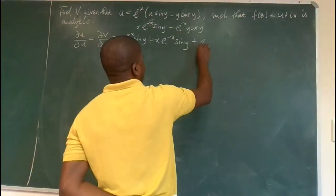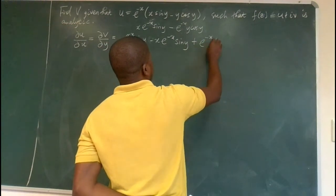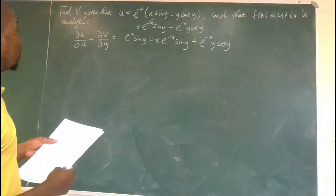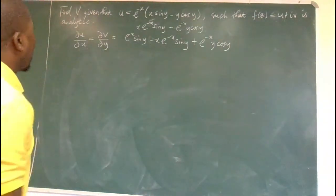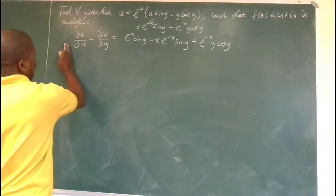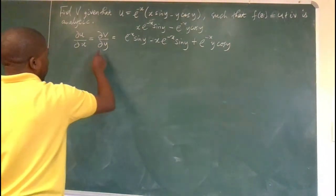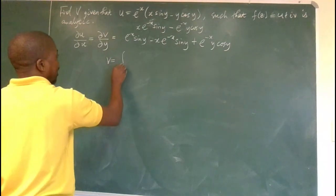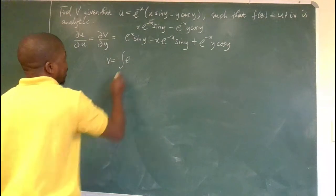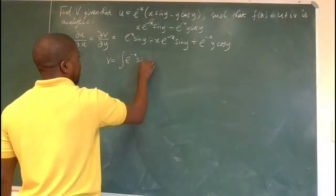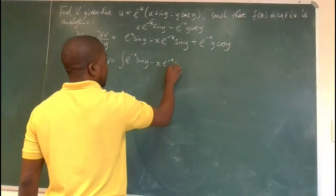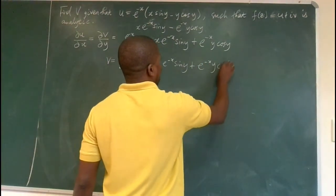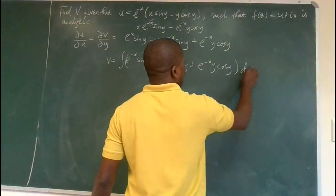The differentiation of the second term gives plus xe^(-x)y·cos(y). So that's the derivative of u with respect to x, and eventually we can see that equals ∂v/∂y. So we ignore certain pieces and consider this. Since we want to find v, we reverse differentiation by integrating, so v equals the indefinite integral of e^(-x)sin(y) - xe^(-x)sin(y) + e^(-x)y·cos(y) with respect to y.